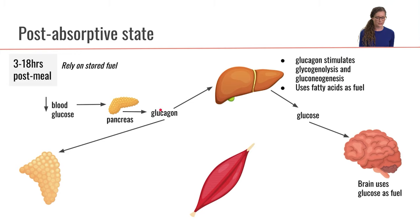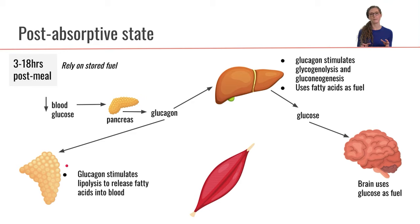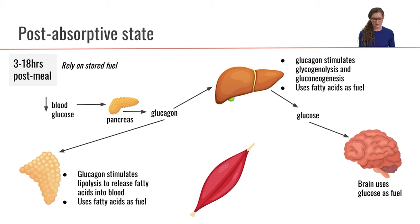Glucagon is also going to stimulate the adipose tissue. Specifically, glucagon is going to stimulate lipolysis in the adipose tissue. Lipolysis is when we take a triglyceride and cleave the fatty acids off of the glycerol backbone. So glucagon stimulates the adipose tissue to perform lipolysis so that the adipose tissue can release fatty acids into the bloodstream, and that is so we can use fatty acids as fuel.